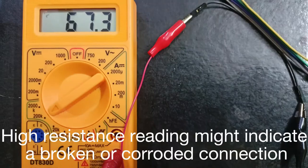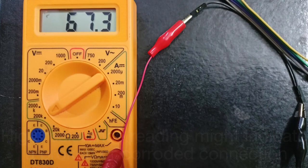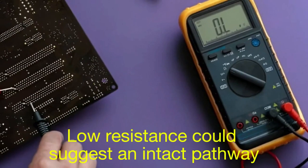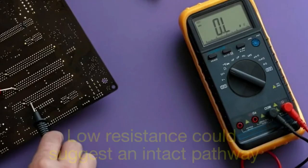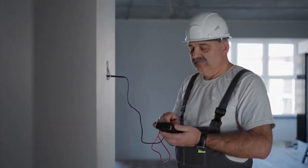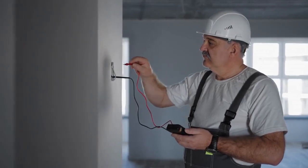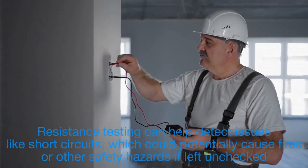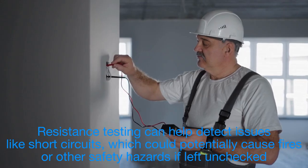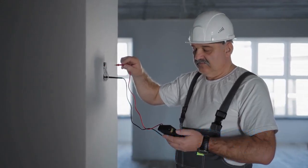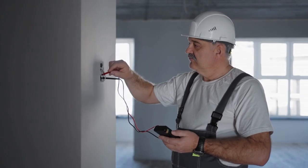A high resistance reading might indicate a broken or corroded connection, while a low resistance could suggest an intact pathway. Electricians commonly use this feature when inspecting wiring for wear or checking if a circuit is complete. Additionally, resistance testing can help detect issues like short circuits, which could potentially cause fires or other safety hazards if left unchecked.